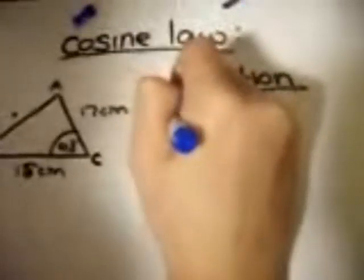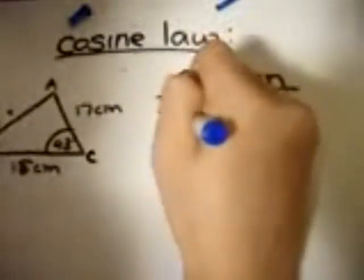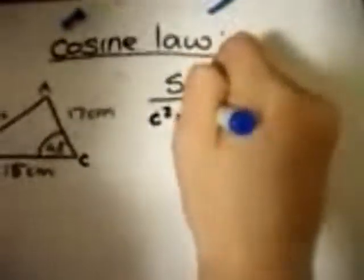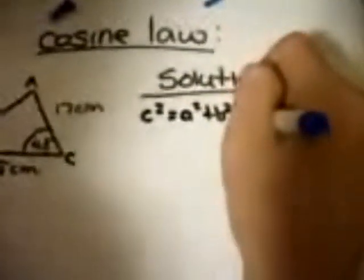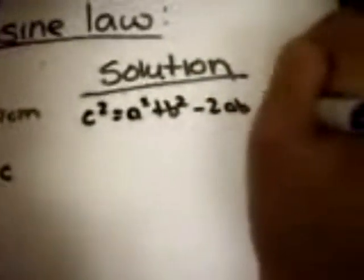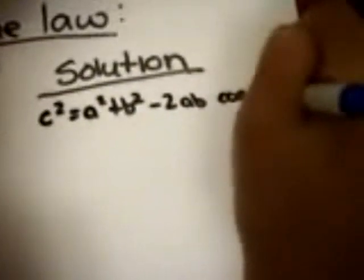The cosine law is C squared equals A squared plus B squared minus 2AB cosine C.